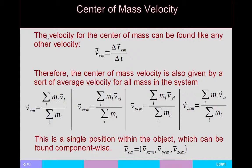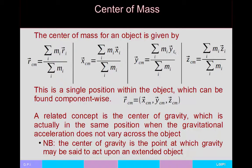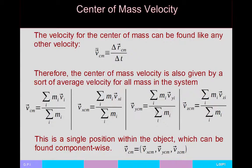You can also find the velocity of the center of mass. It's basically the change in center-of-mass position per unit time — very similar to other velocities as Δx/Δt. Taking the time derivatives of the center-of-mass position equations gives v_cm_x, v_cm_y, and v_cm_z. So to get the total velocity of the center of mass you find these x, y, and z components in Cartesian form. This is what the simulation is doing when it calculates the center-of-mass velocity for a system of two or more particles.